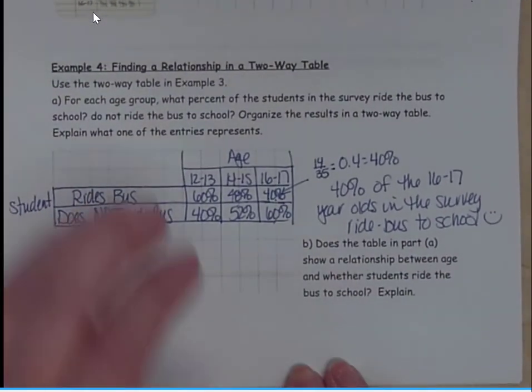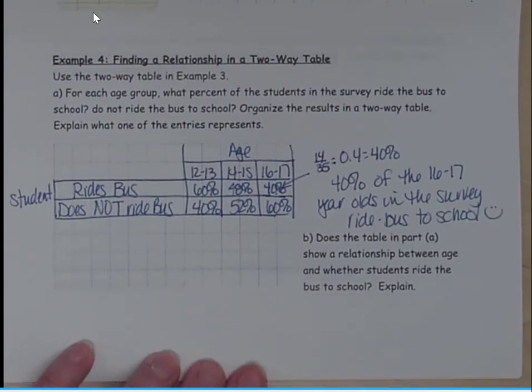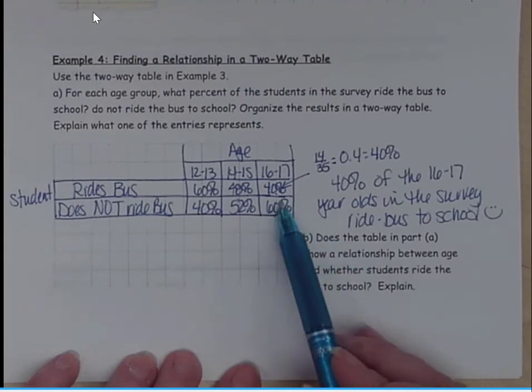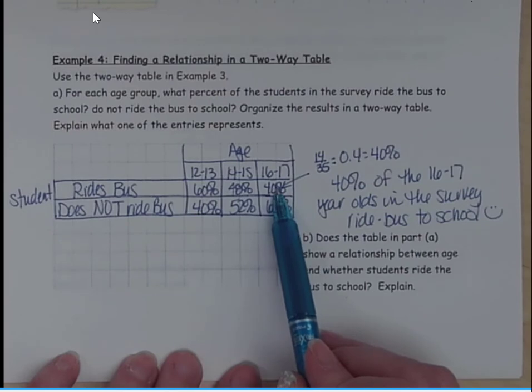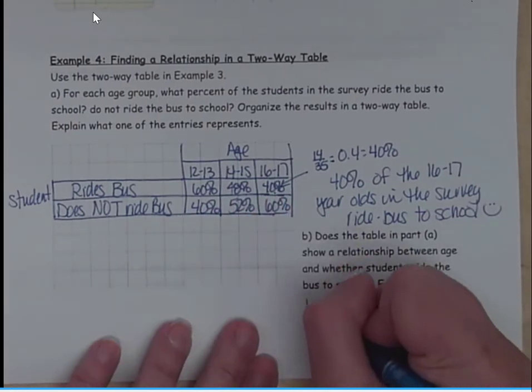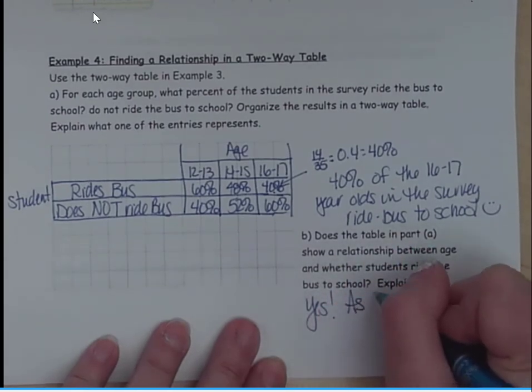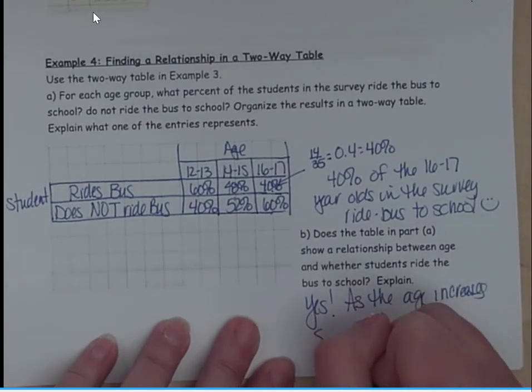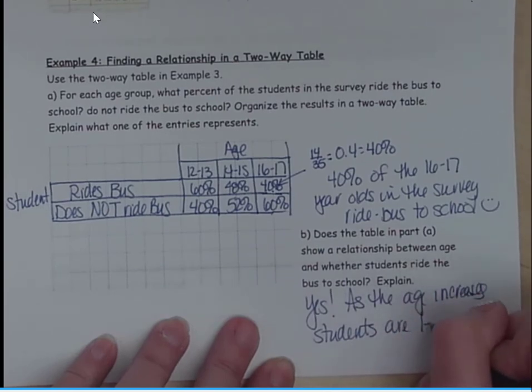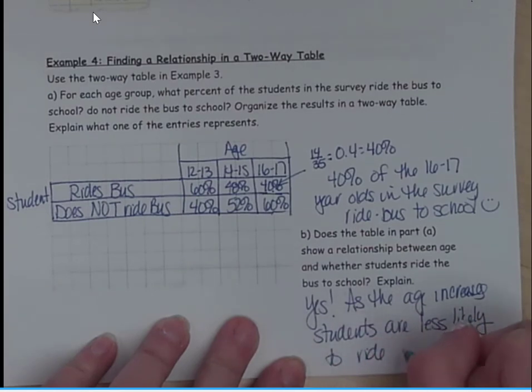So if we look at B, it asks us to interpret this table. Does the table in part A show a relationship between age and whether students ride the bus to school? So it looks like the older the students get, they are less likely to ride the bus. Because if we look at riding the bus, these have decreased, does not ride the bus, those have increased. So yes, as the age increases, students are less likely to ride the bus to school.